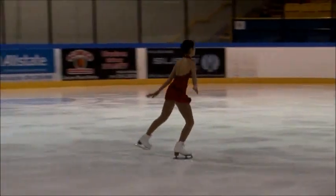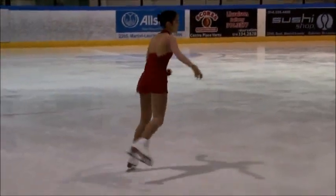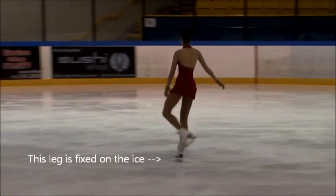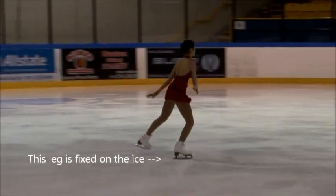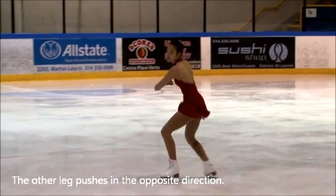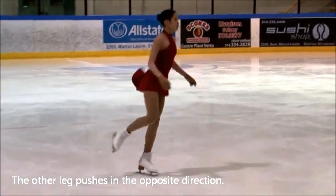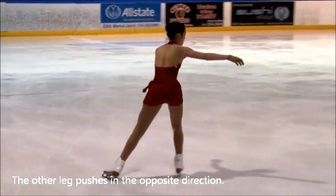Next, you may have wondered how you turn from forwards to backwards and vice versa. To know this, you first need to know a bit about torque. Torque is a quantity that measures the tendency of a force to rotate an object about an axis. To turn, you generate rotating torque by having one leg fixed on the ice while the other leg pushes in the opposite direction. This is what allows you to turn.